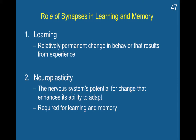Learning is highly linked to neuroplasticity. Neuroplasticity is the nervous system's potential for change that enhances its ability to adapt. We talked about neuroplasticity at the very beginning of this course. Now that you have an idea of how neurotransmitters work, how synapses work, and how the different types of receptors there are, you'll be able to have a more nuanced understanding of what neuroplasticity actually encompasses and how it is required for learning and memory.